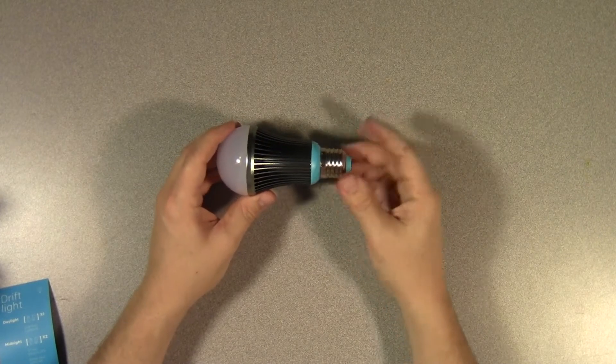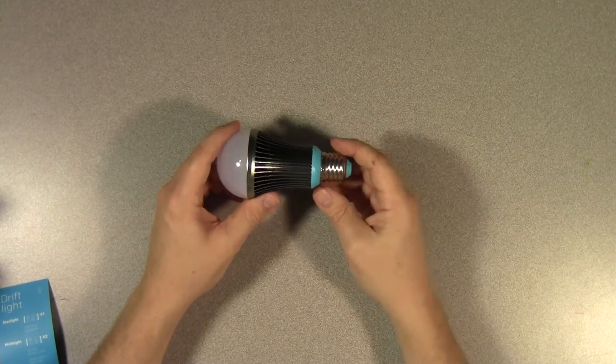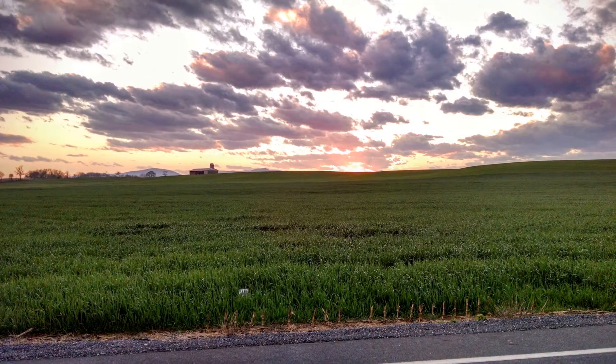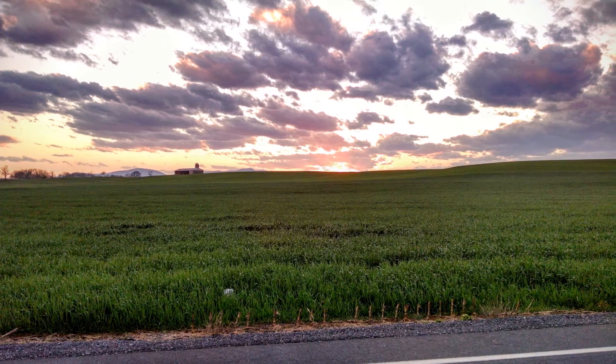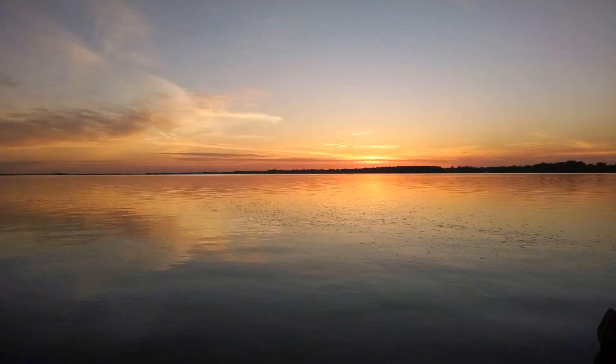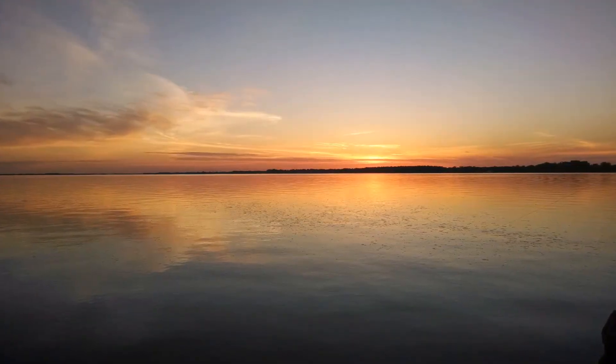If you're wondering what's significant about 37 minutes, it so happens that that's the average length of a sunset. So this bulb is designed to mimic natural light and the fact that natural light slowly dims as you go from daytime into nighttime.